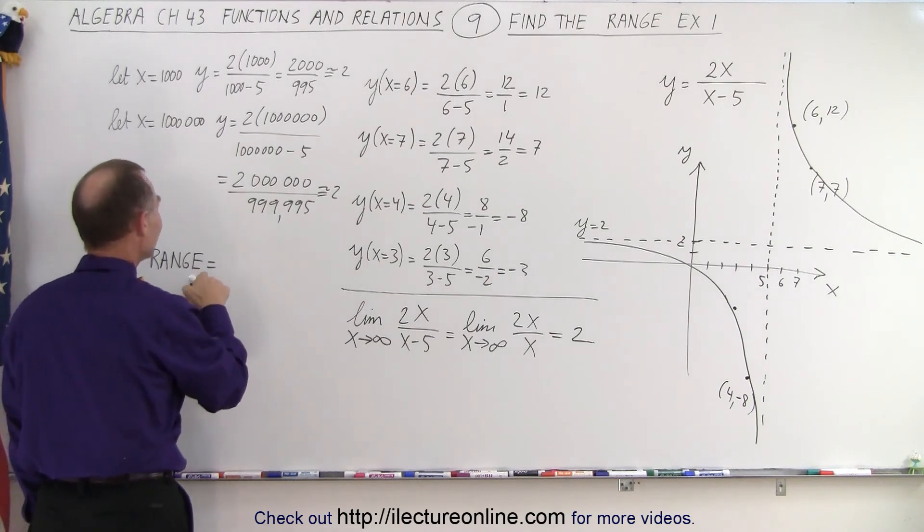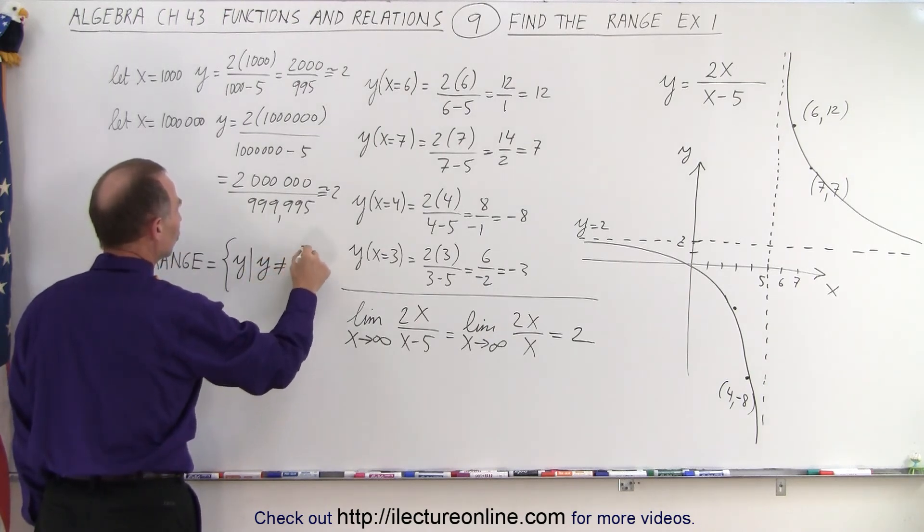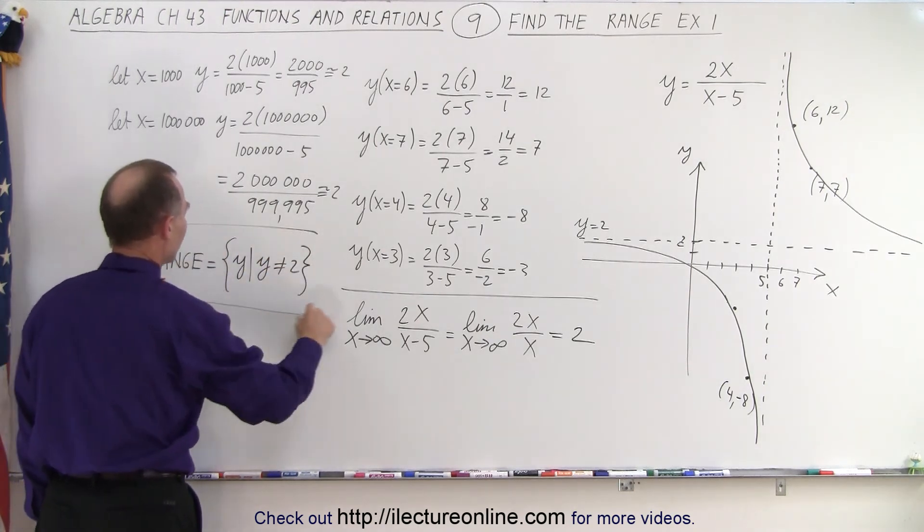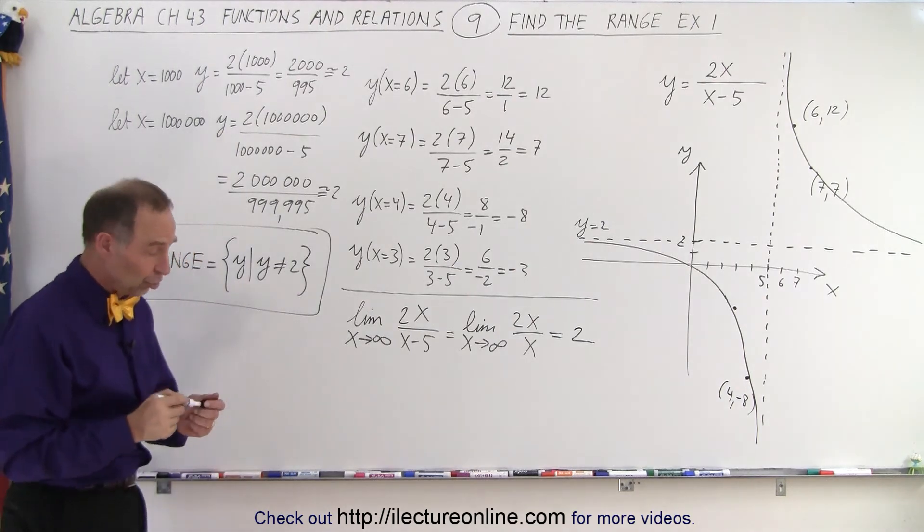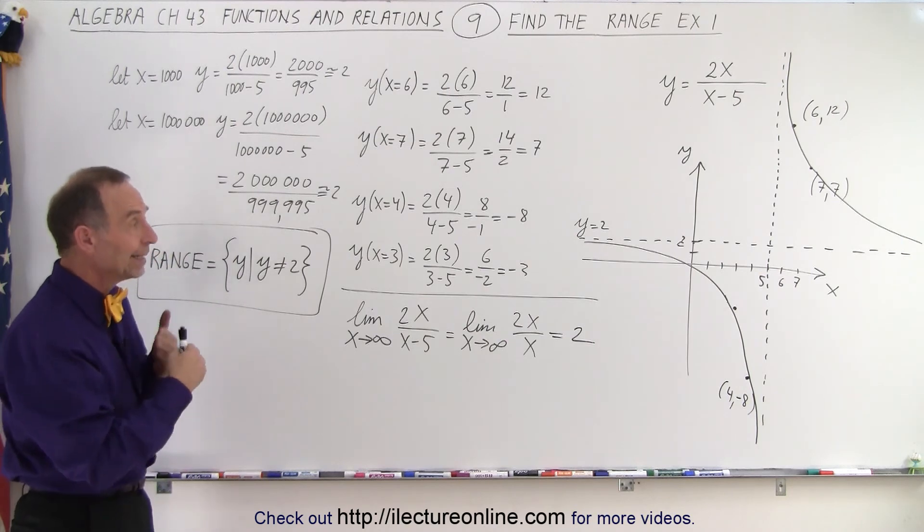All right? So, the range is equal to the set of all values y, such that y cannot equal 2. And that will then be the proper way of writing the range. So, you can see that in this case, again, looking for the range, we're looking for the value that y cannot be, y can be all of the values.